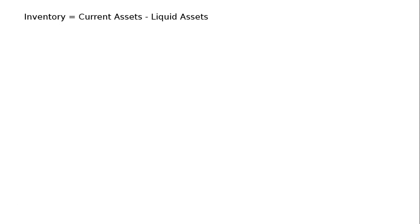Inventory is equal to current assets minus liquid assets. That is, Rs 24,000 equals 3.5X minus 2X, substituting current assets as 3.5X and liquid assets as 2X.